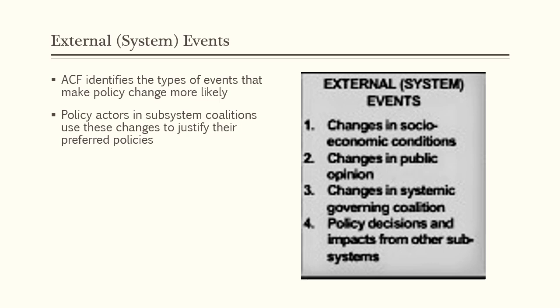A last component of the ACF that I want to highlight is what the framework calls external or system events. Whereas the relatively stable parameters tend to limit policy change, external or system events tend to open up opportunities for new policy or for policy change. For instance, changes in socioeconomic conditions can act as a shock that changes the balance of power between competing coalitions in policy subsystems. The Rolling Stone article assigned for this week highlights the rise of homelessness among working people in California, which can change perceptions of the problem of homelessness and housing affordability in a way that makes policy change more likely.